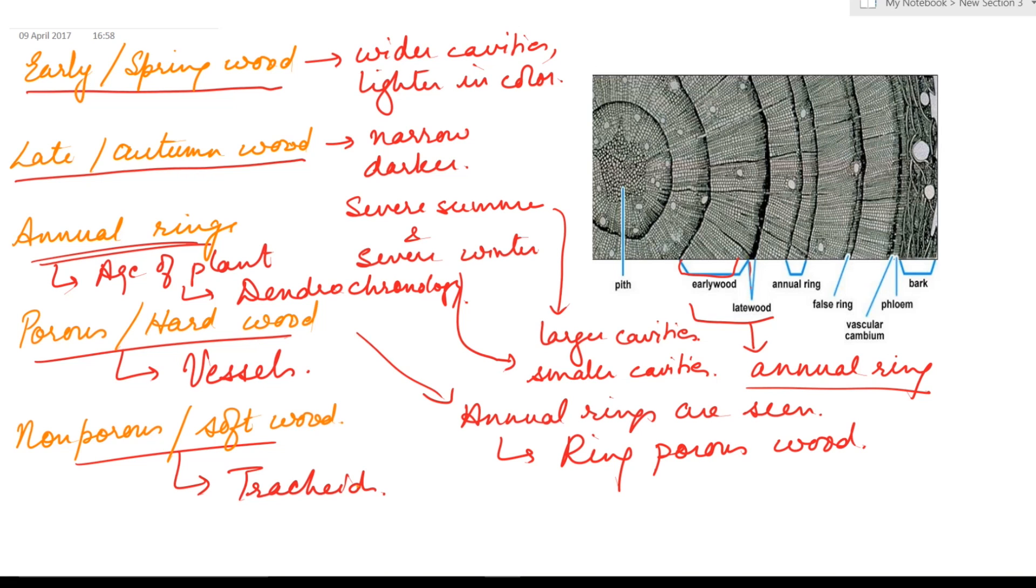While in case of plants growing in regions where temperature is same throughout the year, no annual rings are seen as summer wood and winter wood are all of same size. The wood that is formed is known as diffuse porous wood.